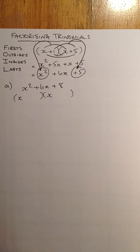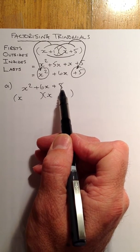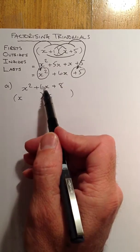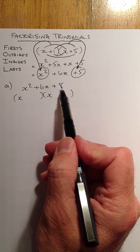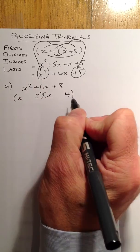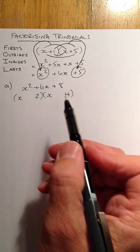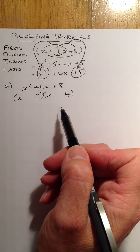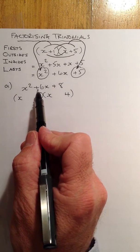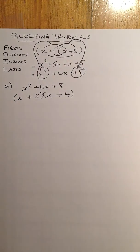From there, I'm trying to make up a value of 6 from these factors. With 1 and 8, I can't make up 6, because 1 away from 8 gives me 7, and adding gives me 9. With the factors of 2 and 4, adding them together gives me 6. So I'm going to put a 2 here and a 4 here, and consider the signs. That sign there is a plus, so both the 2 and the 4 are pluses, and that would be factorised.